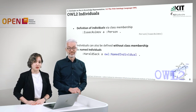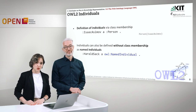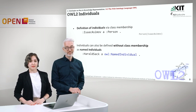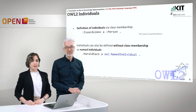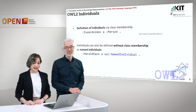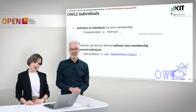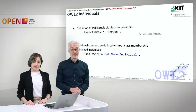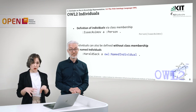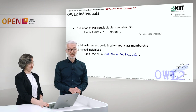Individuals in OWL2 are defined by naming the individual and mentioning class membership. So Isaac Asimov is of rdf:type Person, and we have already defined Person as a class. Individuals in OWL2 can also be defined without class membership — when defined this way, they are called named individuals. Named individuals in OWL2 form a separate class that holds all individuals that do not belong to any other class yet.